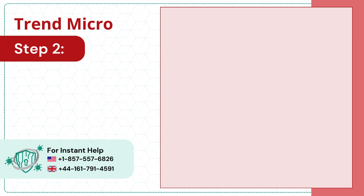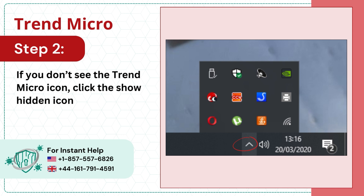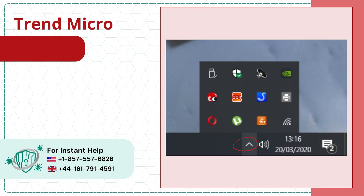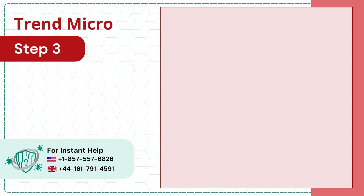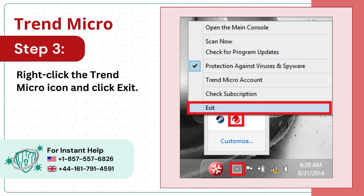Step 2: If you don't see the Trend Micro icon, click the Show Hidden Icons arrow. Step 3: Right-click the Trend Micro icon and click Exit.